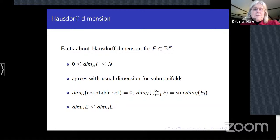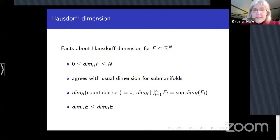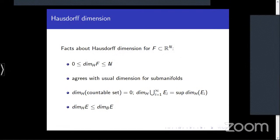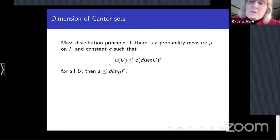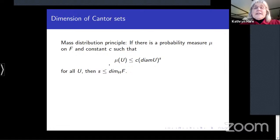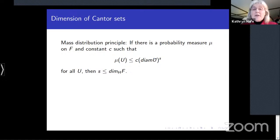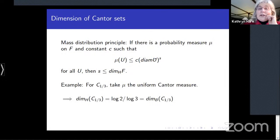Lower bounds on Hausdorff dimension are often harder to find because the definition involves an infimum. Fortunately, we have the mass distribution principle: if there is a measure μ supported on your set F with the property that μ(U) ≤ C · |U|^s for any set U, then s is a lower bound on the Hausdorff dimension of F.